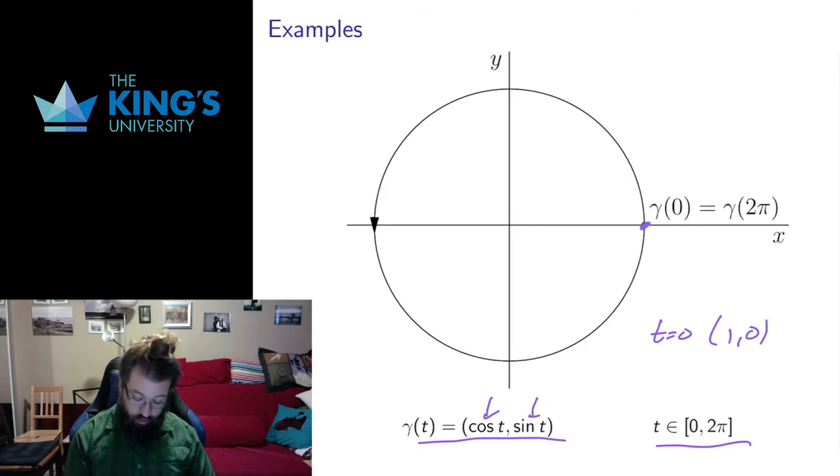What happens at t equals π over 2? Well, cos of π over 2 is 0, sin of π over 2 is 1, that gives me this point.